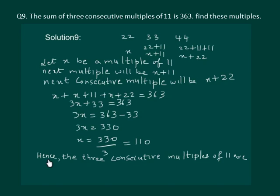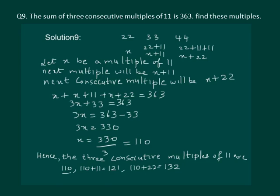Hence the 3 consecutive multiples of 11 are 110, 110 plus 11 equal to 121, and 110 plus 22 which is equal to 132. That means 110, 121, and 132 are the required multiples of 11.